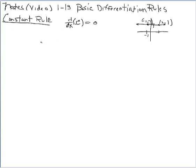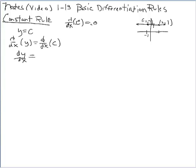Let's put this in equation form. If we have the constant function y equals c, and we bring in the derivative operator on both sides of the equation, the left side becomes dy over dx — the rate of change of y with respect to x — and the right side gives us 0. Also, dy over dx could be written as y prime. These are just two different notations representing the same idea.